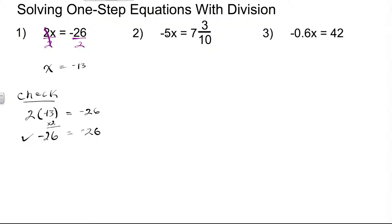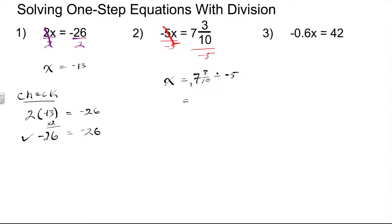In problem number 2, we have negative 5x is equal to 7 and 3 tenths. We're going to use the division property of equality and divide each side by negative 5. On the left-hand side, the negative 5s divide out, leaving 1x. On the right-hand side, we rewrite 7 and 3 tenths as an improper fraction: 10 times 7 is 70, and 70 plus 3 is 73, giving us 73 over 10.